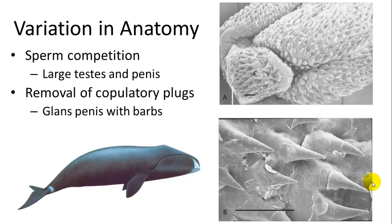There is a lot of variation in penis anatomy. Some characters depend on life history and female reproductive traits, such as barbs on the tip of the penis called the glans, found in bats. These are thought to remove copulatory plugs which form in the female reproductive tract covering the cervix. Some mammals have very large penises and testes relative to body size, such as bowhead whales and sperm whales, thought to produce copious amounts of sperm for polygamous or promiscuous reproductive strategies involving sperm competition.